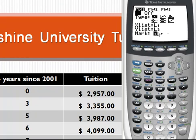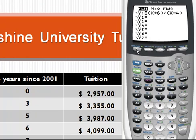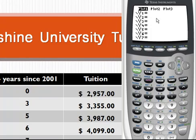Next, I'd like to actually check to make sure I have no data in my Y equals area. So I press Y equals, and you notice I have some information here. This is not relevant to our problem, so I'm going to clear this. So my Y1, Y2, Y3 is all empty.